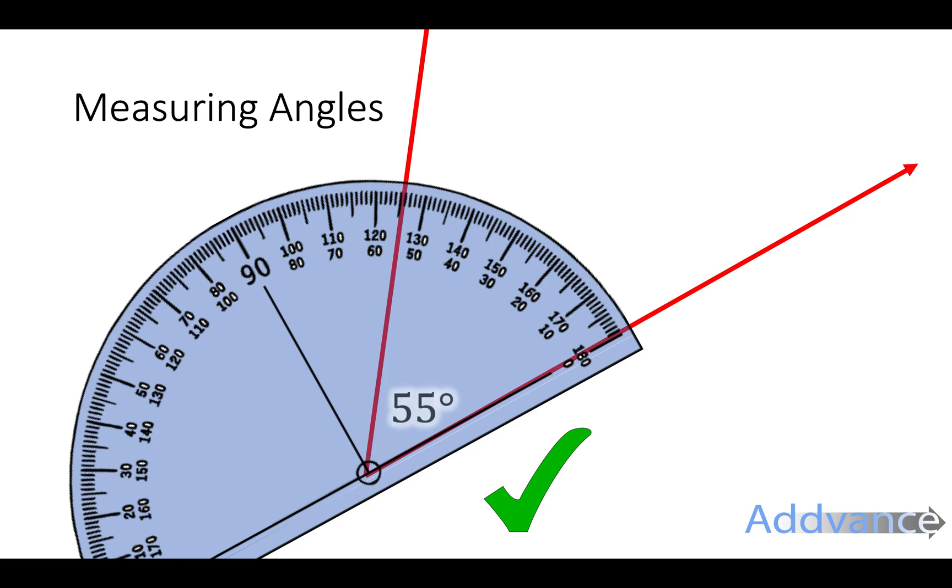Okay and we measure it and it's if you count 0, 10, 20, 30, 40, 50 and then another five or five small dashes it's 55 degrees.